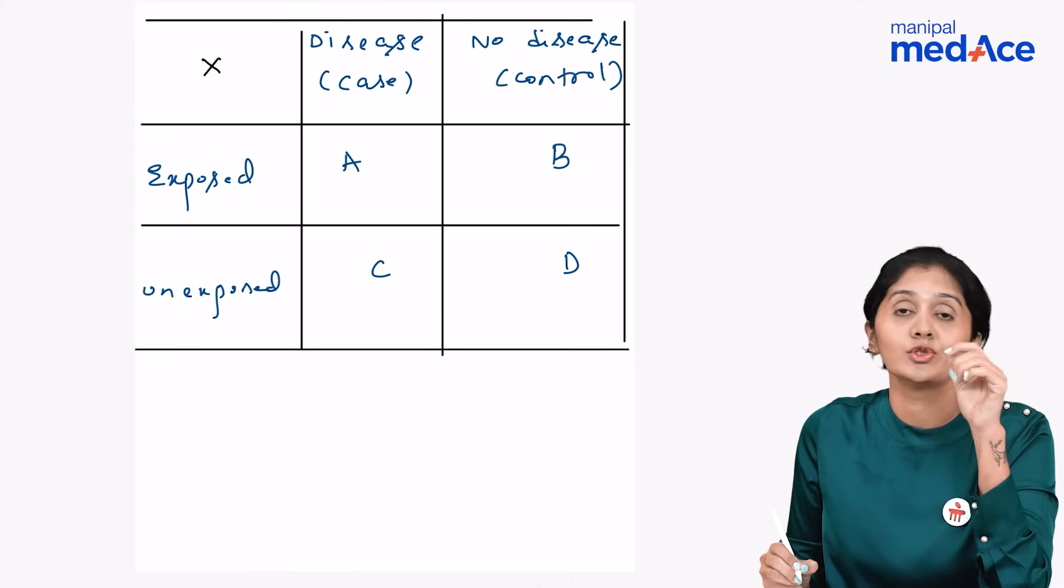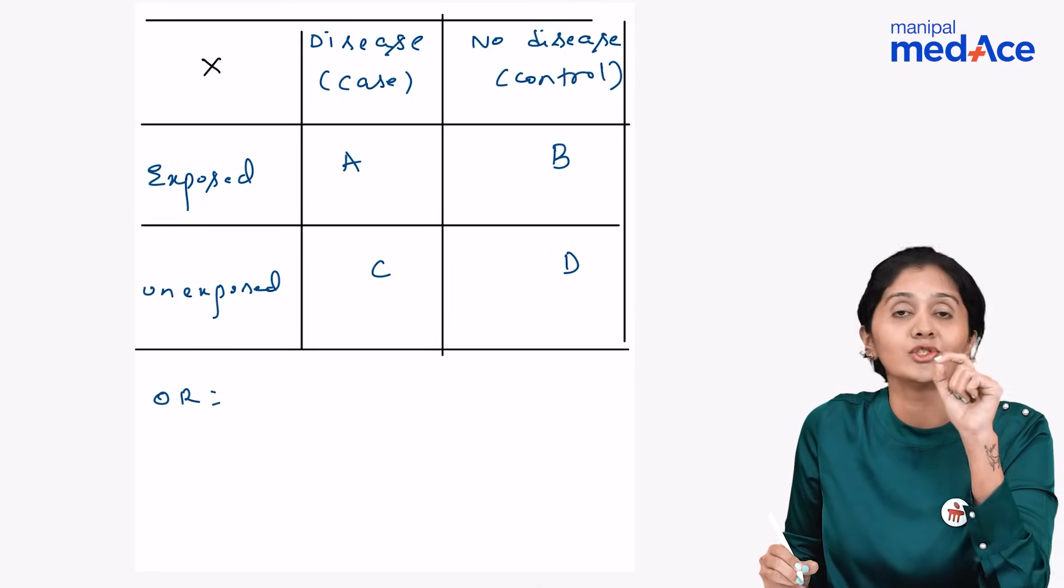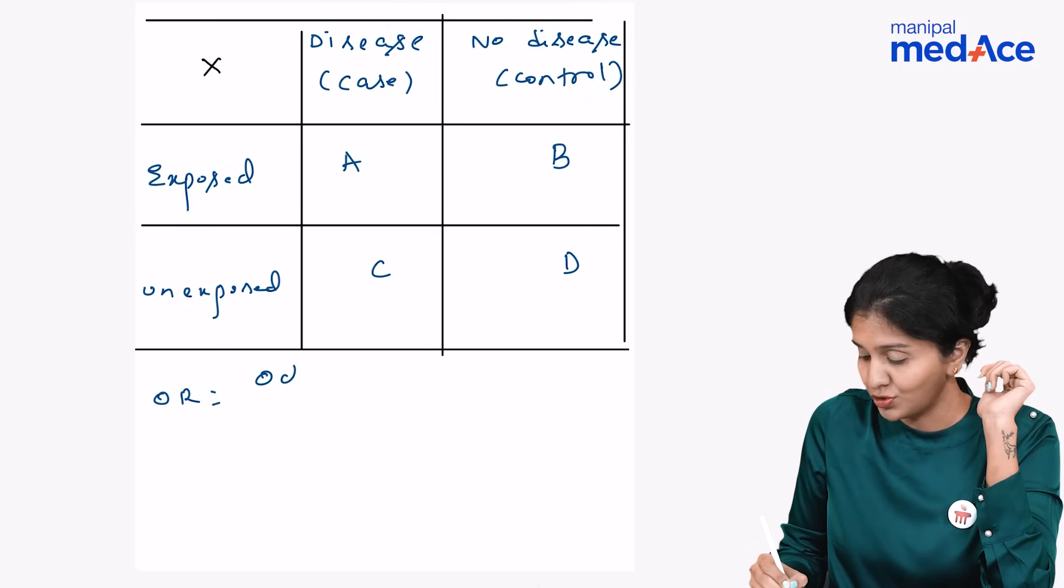What is the formula for odds ratio? How have we derived the formula for odds ratio? Odds ratio is ratio of two odds, ratio of two odds.